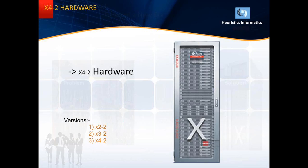Let's look at the hardware of each component and what optimization techniques are available in the Elastic Cloud. From the year 2010, Oracle has released different versions. The first version released is X2-2, followed by X3-2, and the latest version currently available is X4-2, which is available in two configurations: high capacity and high performance.